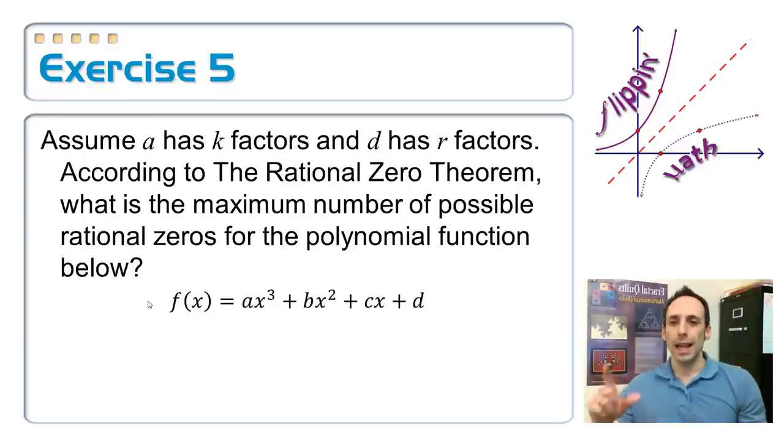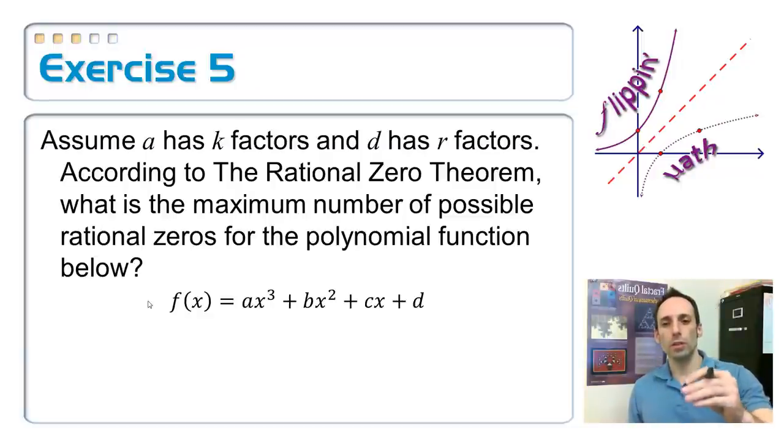So, what I'm saying here is that A has k factors, however many that is. That could be 2, 3, 4 factors, whatever. And d has r factors. Now, if I do the rational zero theorem on this to list out all the possibilities that I'd have to check with synthetic division, how many maximum could there be?